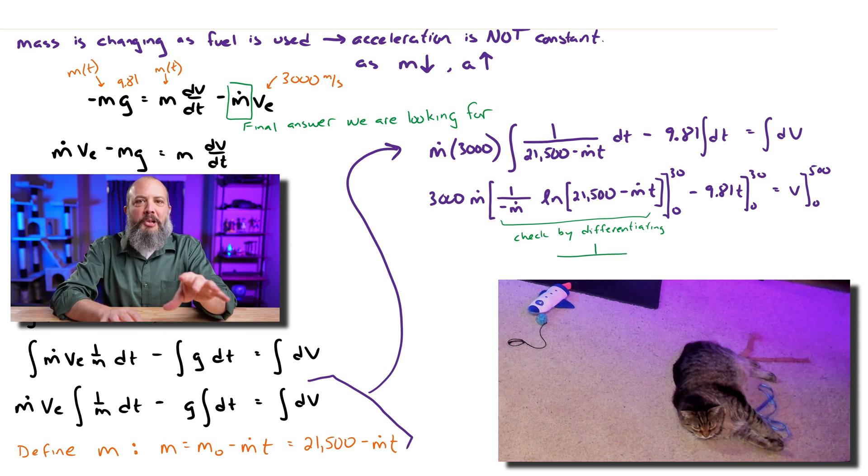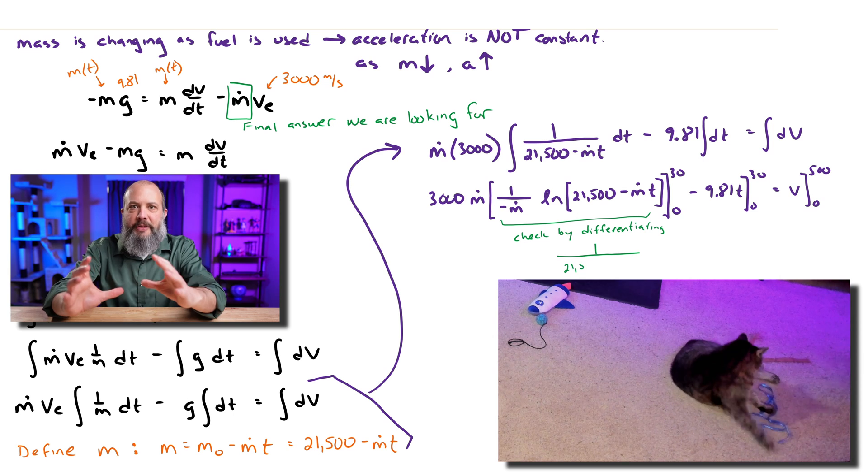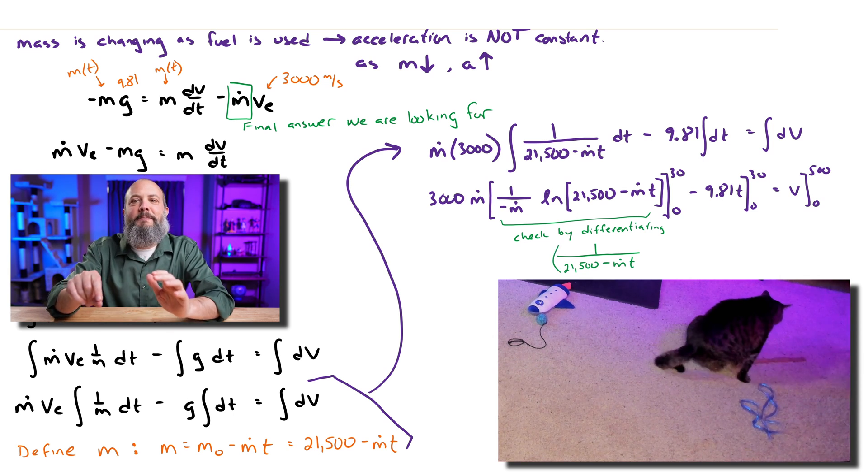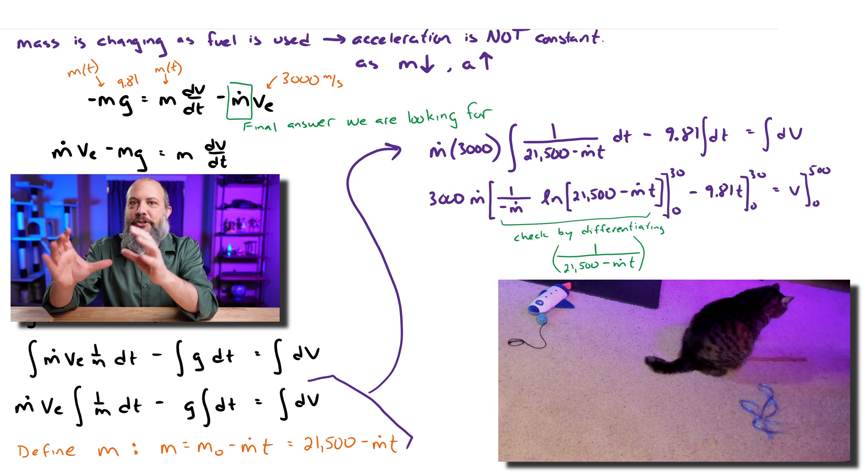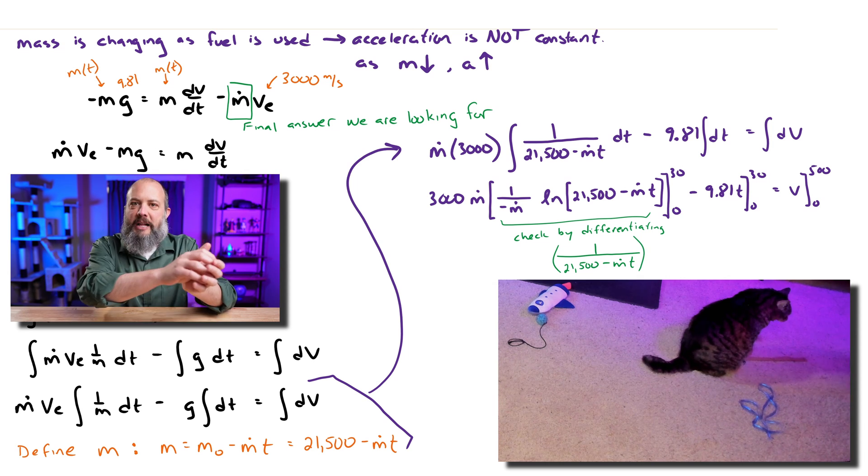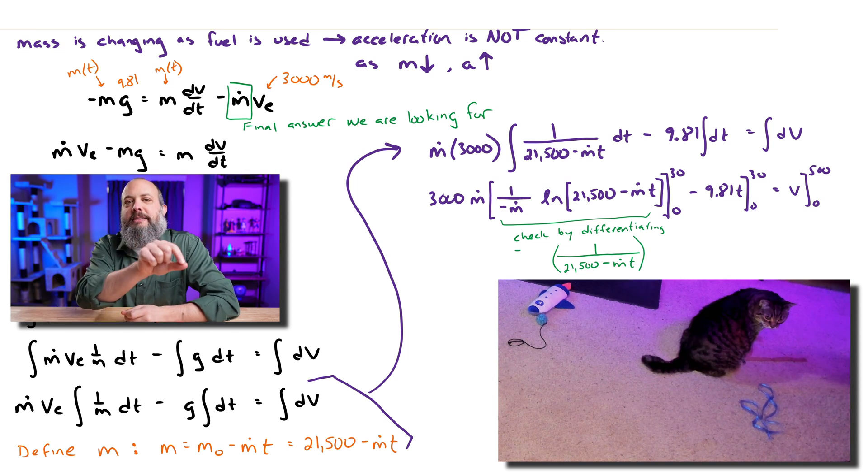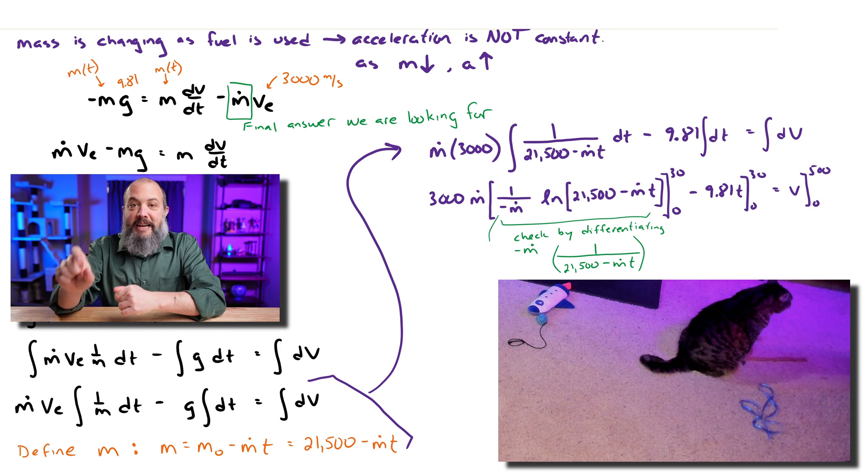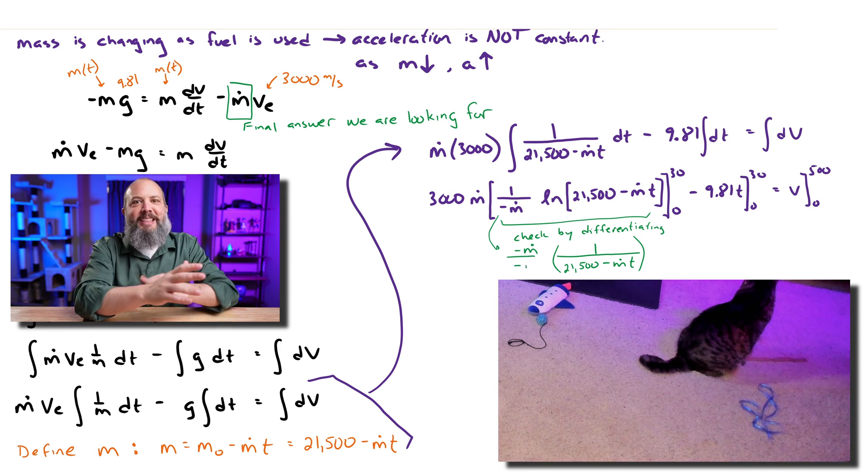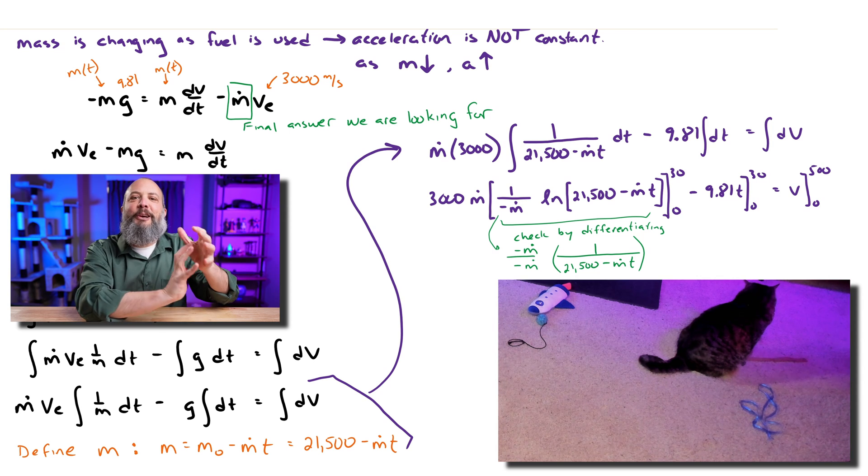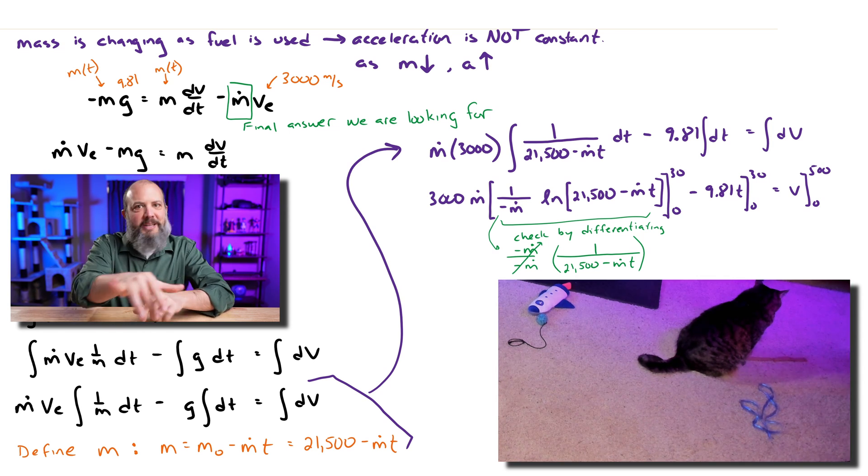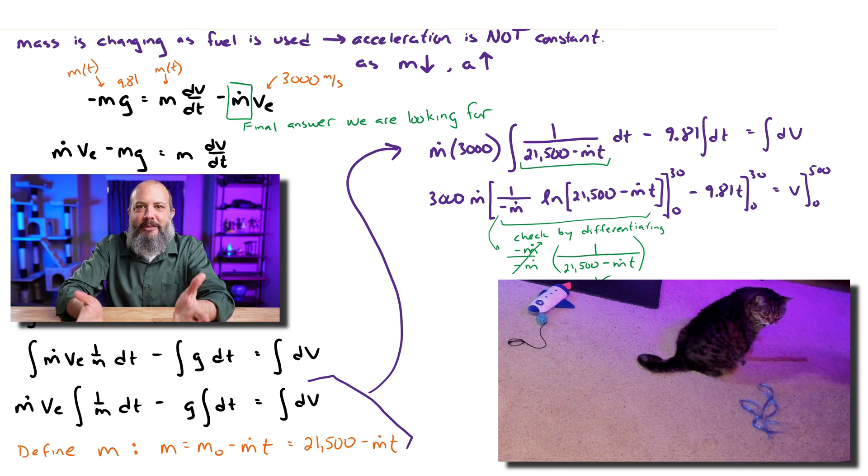So the derivative of natural log is 1 over everything in parentheses. That's the 21,500 minus m dot t. But then because of chain rule, you'd also have to take the derivative of the inside. So you would multiply by negative m dot, which is the coefficient in front of time. So multiplying by negative m dot gets cancelled out by that 1 over negative m dot that we had out front. So yes, check mark, this actually is the correct integral because when we differentiate it, we get back the thing we started with.